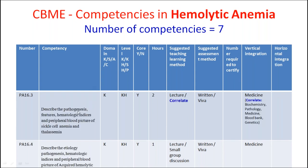The third competency is to describe the pathogenesis, clinical features, and hematological indices of sickle cell anemia and thalassemia. These are the two major hemolytic anemias we encounter in practice. Because of population migration, it is no longer unusual to see thalassemia in South India. A correlate session will help link the pathological findings with pathogenesis, and medicine will cover clinical features and investigation.